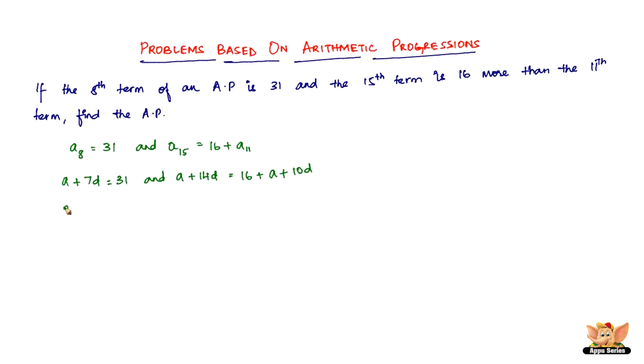On solving this, we get a plus 7d equals 31. Here, a and a cancel, and we've got 14d minus 10d, which is 4d equals 16. From this, d equals 16 divided by 4, which is 4.